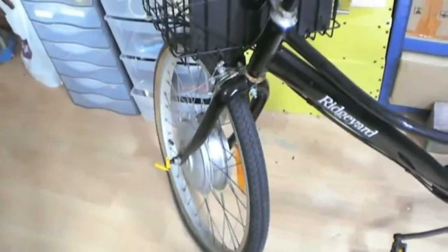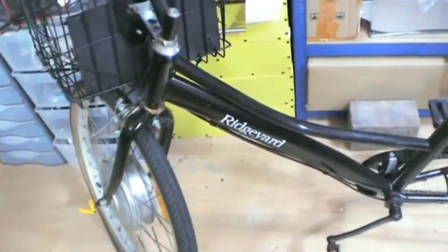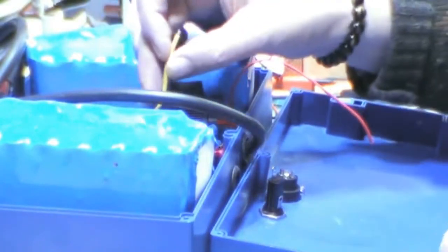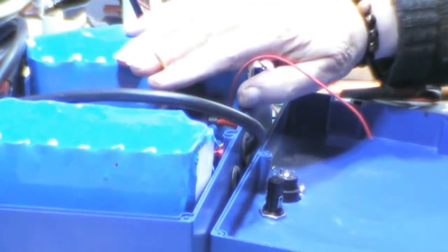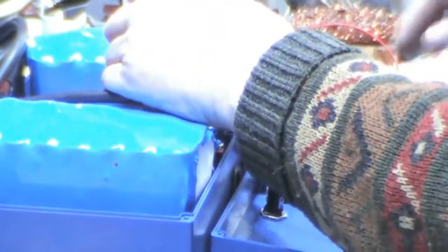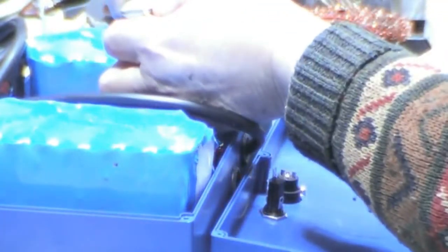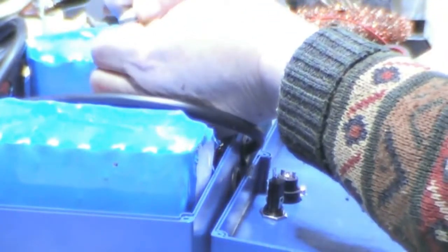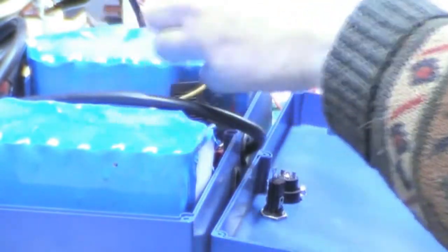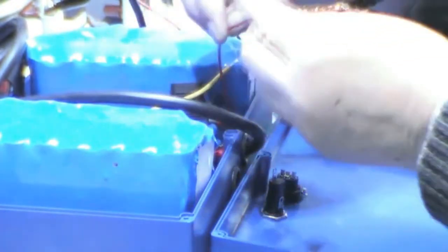Okay, this is the negative from charge negative from the BMS. What I'm going to do is put a crimp on there. And this is coming from the positive for the charging.